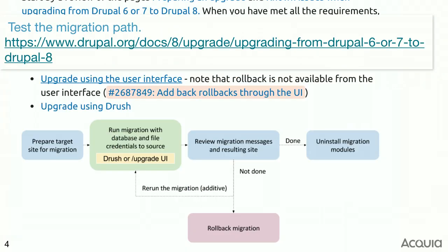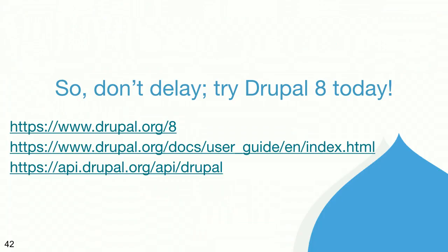I'd also recommend setting up a dev site in Drupal 8 and trying the migration path out to see what works for you and what doesn't. Right now there's a lot of focus on making that migration path stable — core committers have it at the top of their queue. If you're running into problems with the migration path, jump in and tell us about it now.